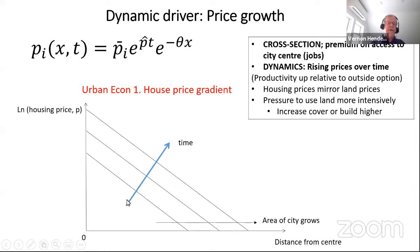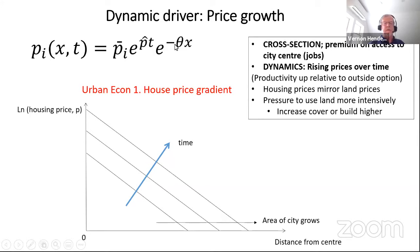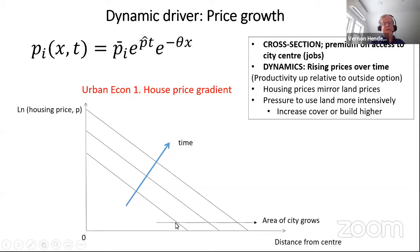In urban economics, distance from the city center determines housing prices — you have a gradient where prices decline with distance. We model that as X equals distance from the city center in exponential form. These prices rise over time as population expands and income rises at a rate we will estimate, along with a theta parameter.